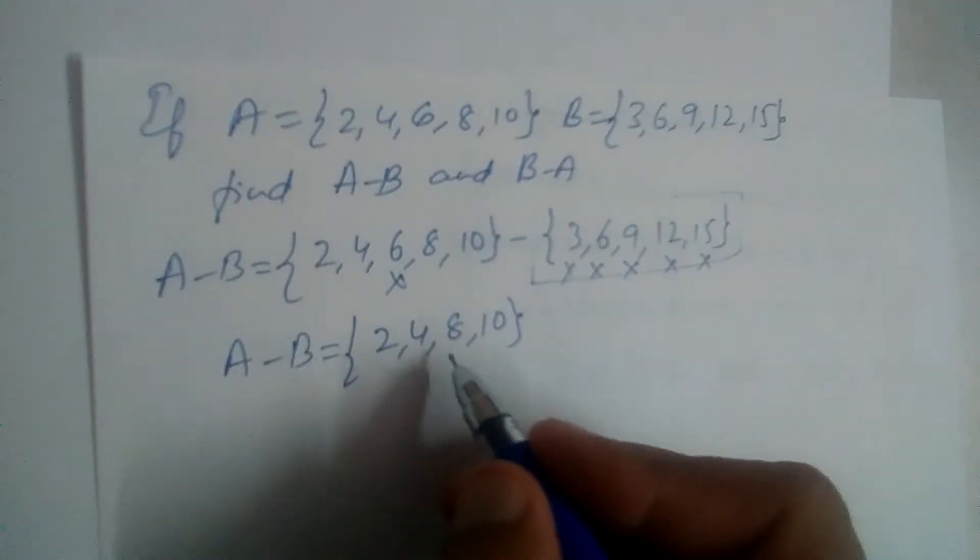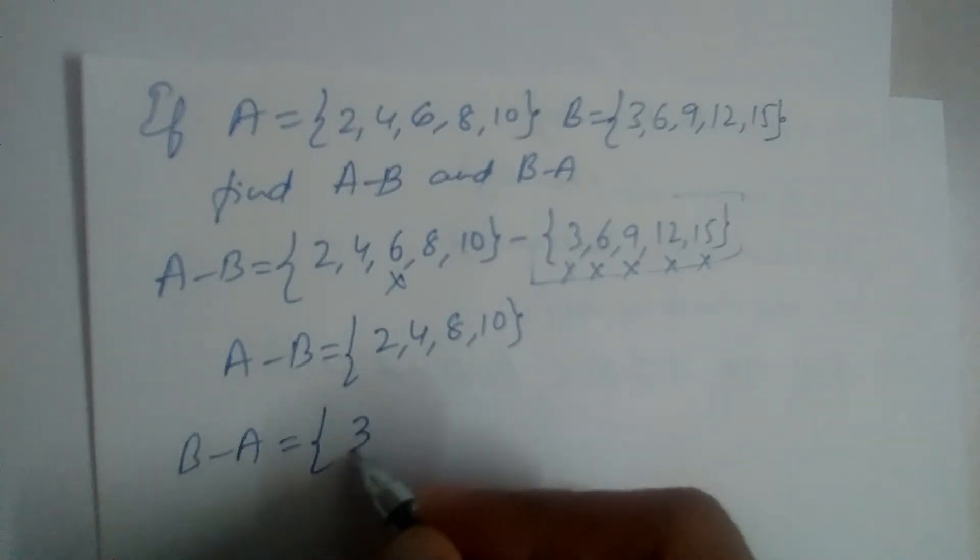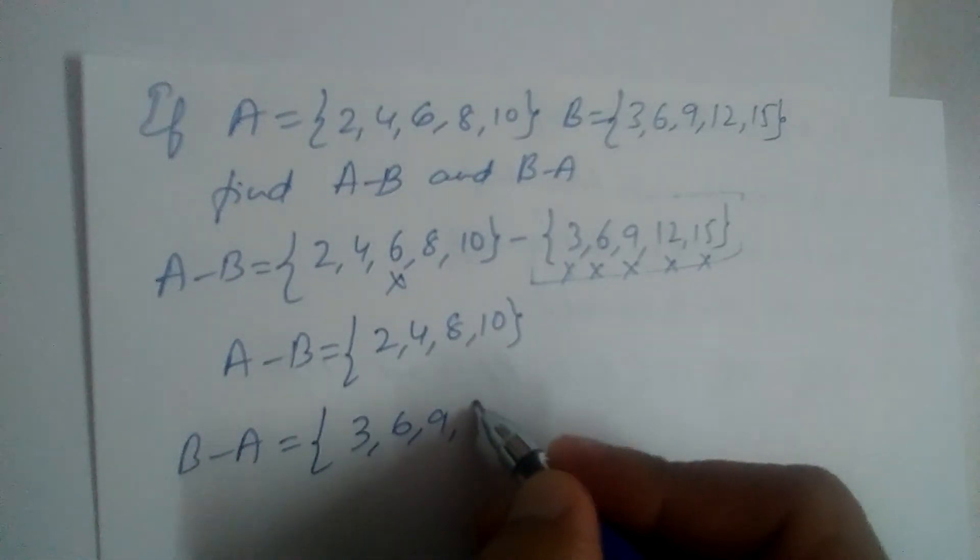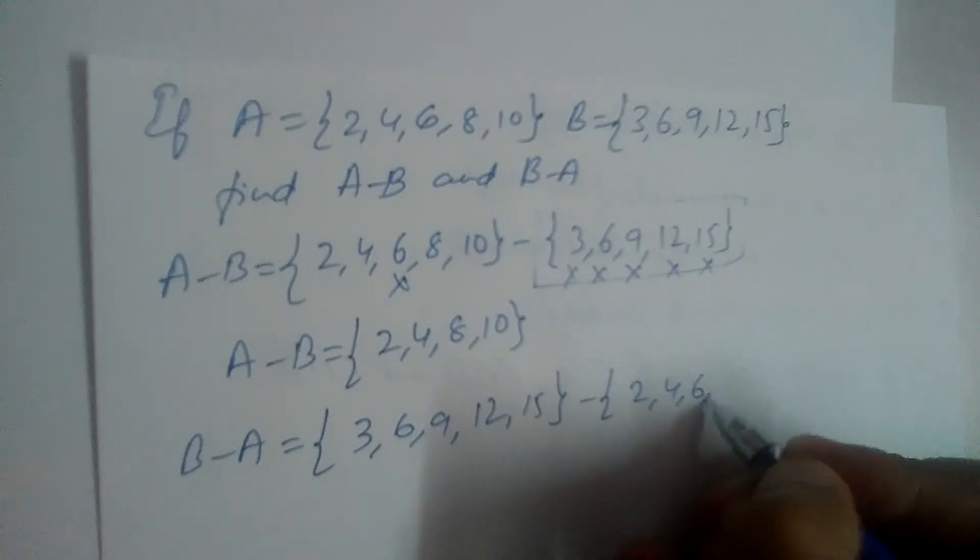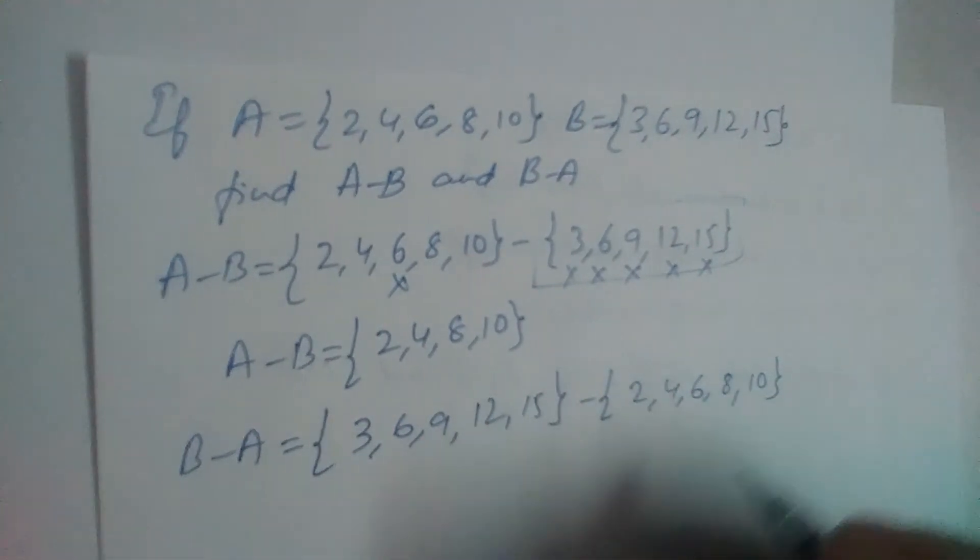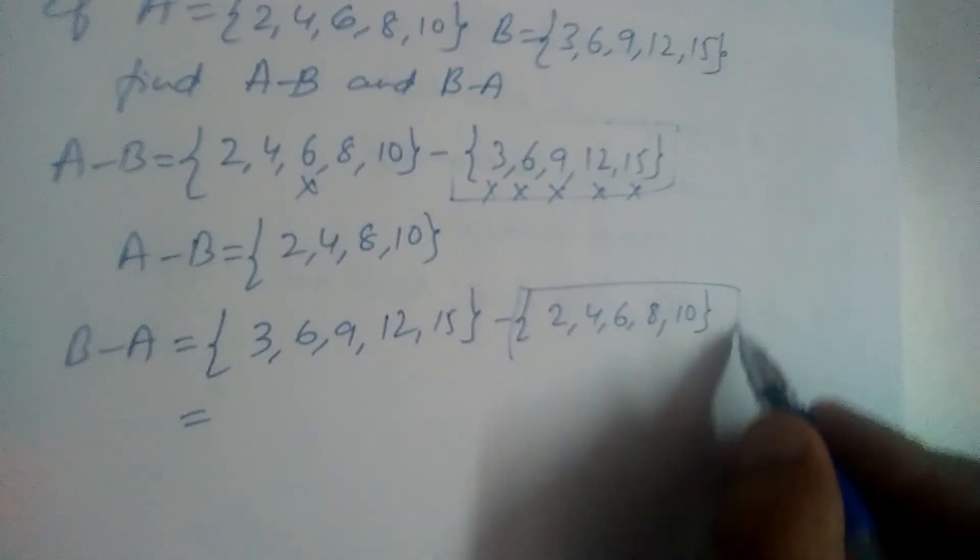Now A minus B is 2, 4, 8, 10. Let us write B minus A. B first: 3, 6, 9, 12, 15 minus 2, 4, 6, 8, 10. So B minus A means what? The elements that are present in A should not be written.